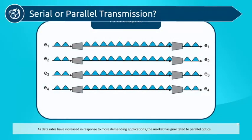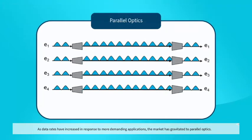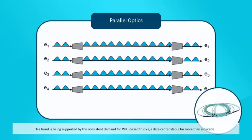As data rates have increased in response to more demanding applications, the market has gravitated to parallel optics. This trend is being supported by the consistent demand for MPO-based trunks, a data center staple for more than a decade.